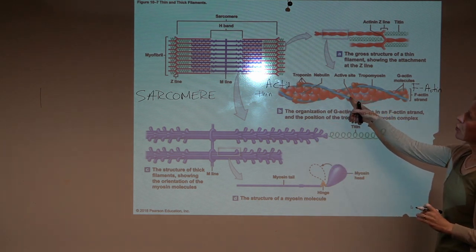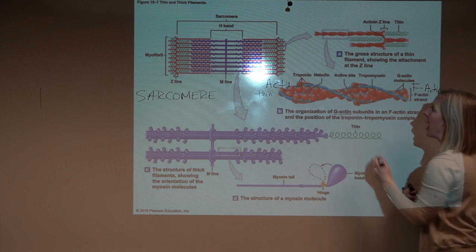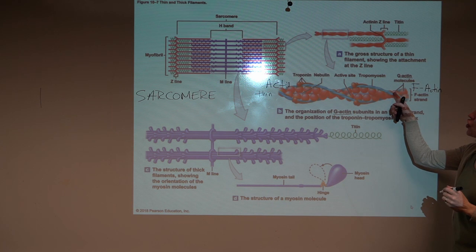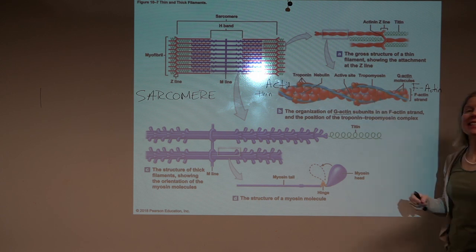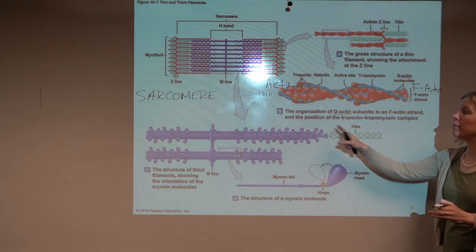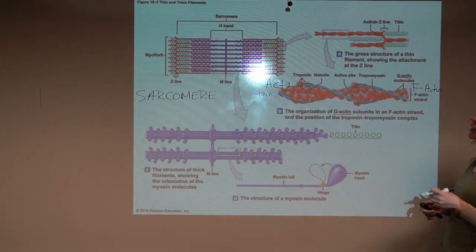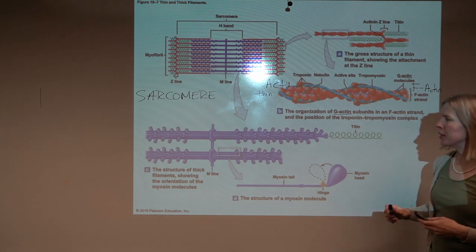Each of those strings, though, is made up of individual, what we call G-actin, globular actin subunits. Each G-actin, the little yellow part that's kind of hidden here, is the active site. The active site is where myosin will actually bind. So actin is our thin filament. It is one of our contractile proteins.